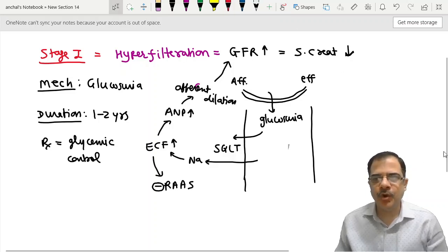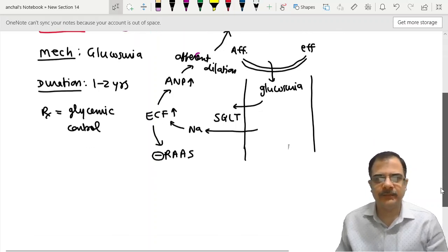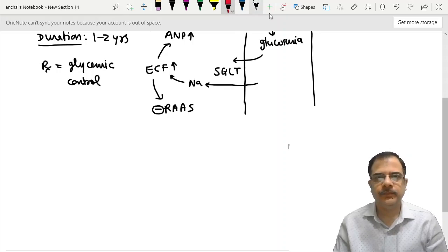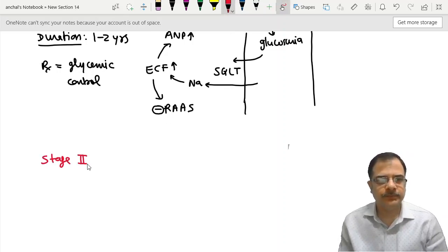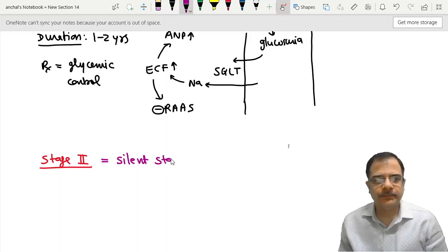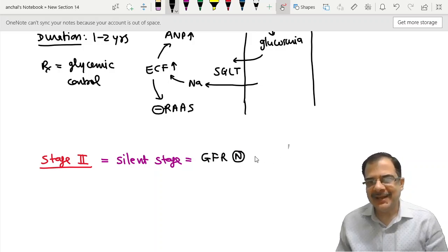Come to stage 2 of diabetes nephropathy. Stage 2 of diabetic nephropathy is also known as the silent stage. Here, the GFR comes to normal. It normalizes, and serum creatinine normalizes.